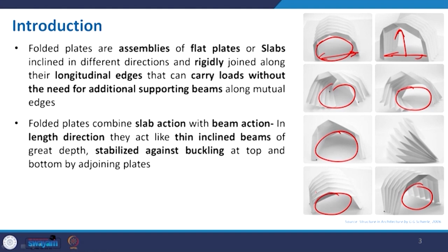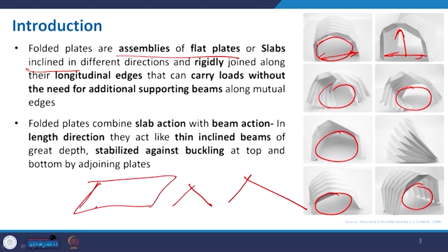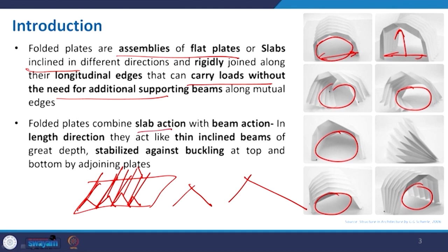What exactly is it? Folded plates are assemblies of flat plates or slabs, alternatively inclined in different directions — it may be inclined this way or some other way, and members may not be equal — and rigidly joined along their longitudinal edges. Basically, you take this paper, divide it, and make a fold. The same paper is folded and squeezed to carry loads without the need for additional supporting beams. In most cases, folded plates combine slab action and beam action together.